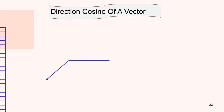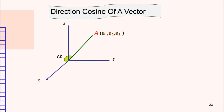Now, let us look at the direction cosine of a vector. Given by these three axes — x, y, and z — if we have a vector a, which is (a1, a2, a3), and the angle between x and the vector is given by alpha, then this is the angle beta, and this one is the angle gamma.